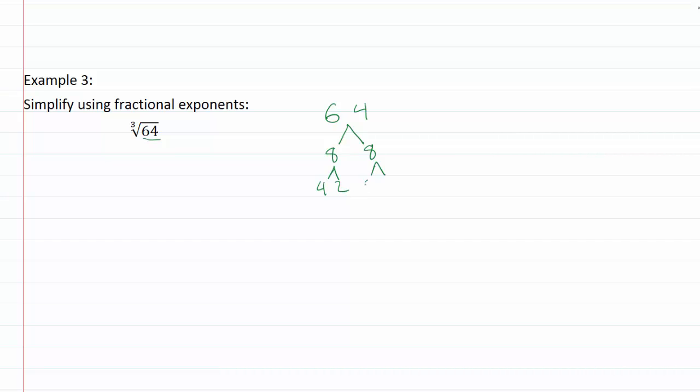So I know sixty-four is eight times eight and then I can break each of those eights down into four times two. So in the end I'm coming up with two six times so this is going to be the same thing as two raised to the sixth. So now I have an exponent to use as my numerator and this index right here will be my denominator.